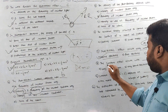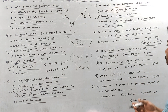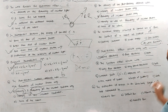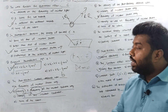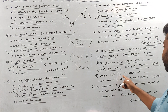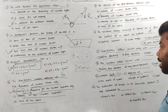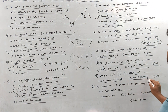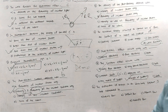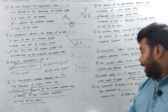The Compton effect occurs with free electrons only — not bounded electrons. The Compton shift, lambda-dash minus lambda, depends on the angle of scattering.